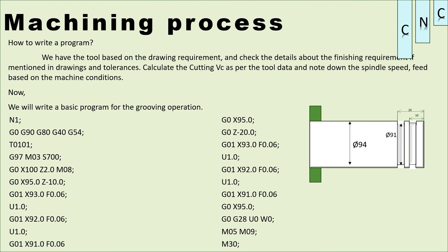In the machining process, you can do all the machining operations based on drawing requirements and basic programming. First, check the groove width from the drawing requirements and the material. If you need to check the drawing requirements for the area — whether it is forging or casting — so it has raw material. Then calculate the cutting speed (Vc). You have to select the tool and calculate that data.